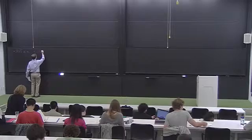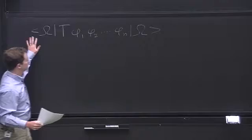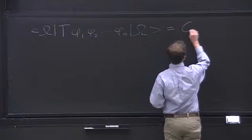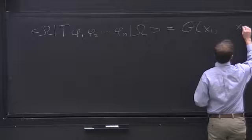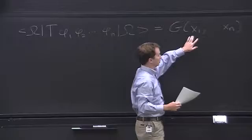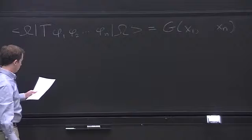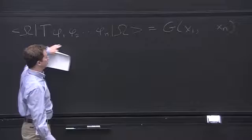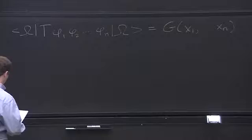Our goal today is to learn how to calculate time-ordered products of fields. These are sometimes called Green's functions or endpoint functions, and we'll use the notation g of the spacetime points at which the fields are evaluated. We're going to learn how to calculate these quantities by doing perturbation theory.